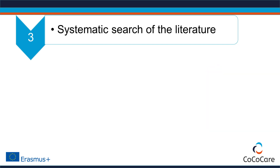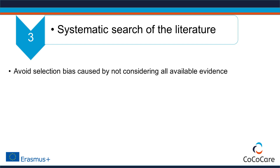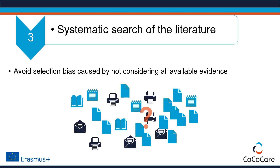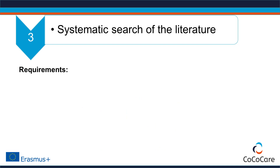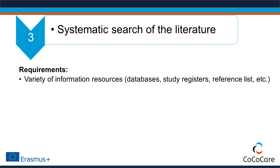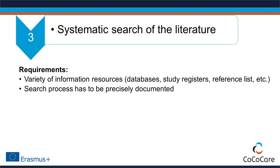The literature search is one of the defining methods of a systematic review. The aim is to avoid selection bias caused by not considering all available evidence, meaning it is necessary to get as close as possible to finding all relevant studies. The systematic search must use a variety of information resources — for example, databases like PubMed, study registers like clinicaltrials.gov, or reference lists of known relevant publications. The search process must be precisely documented to be transparent and reproducible.